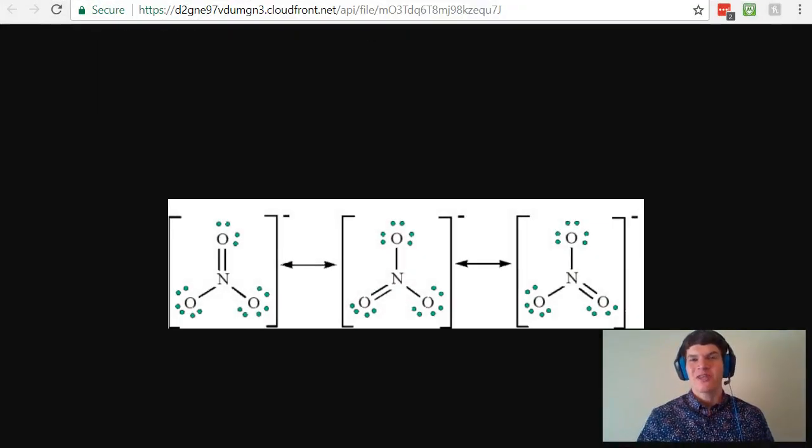In order to accurately represent nitrate, we need to draw it in these three different resonance structures. But keep in mind that nitrate is not bouncing between each of these structures. You will never be able to isolate nitrate in any one of these three forms. It can't be found. It doesn't exist.